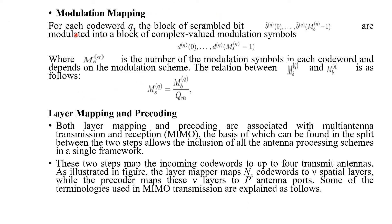Modulation mapping. The block of scrambled bits for codeword Q is given by b_Q(0) up to b_Q(M_B^Q - 1). The modulator maps these into a block of complex-valued modulation symbols D_Q(0) up to D_Q(M_S^Q - 1), where M_S^Q is the number of modulation symbols in each codeword and depends upon the modulation scheme. The relation is M_S^Q equals M_B^Q divided by Q_m.